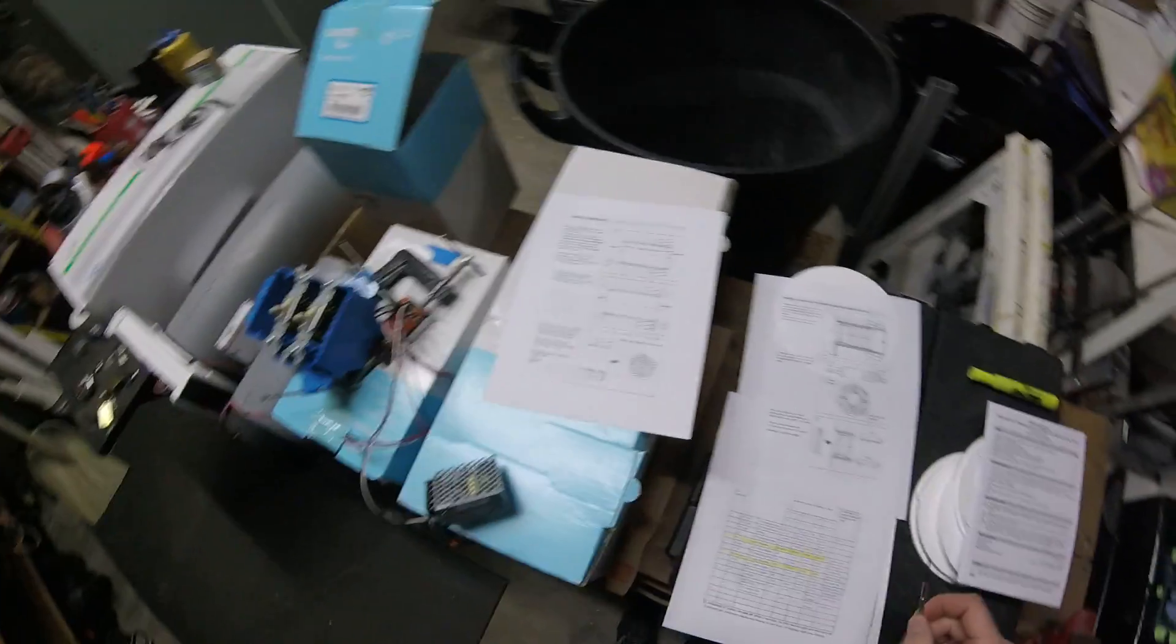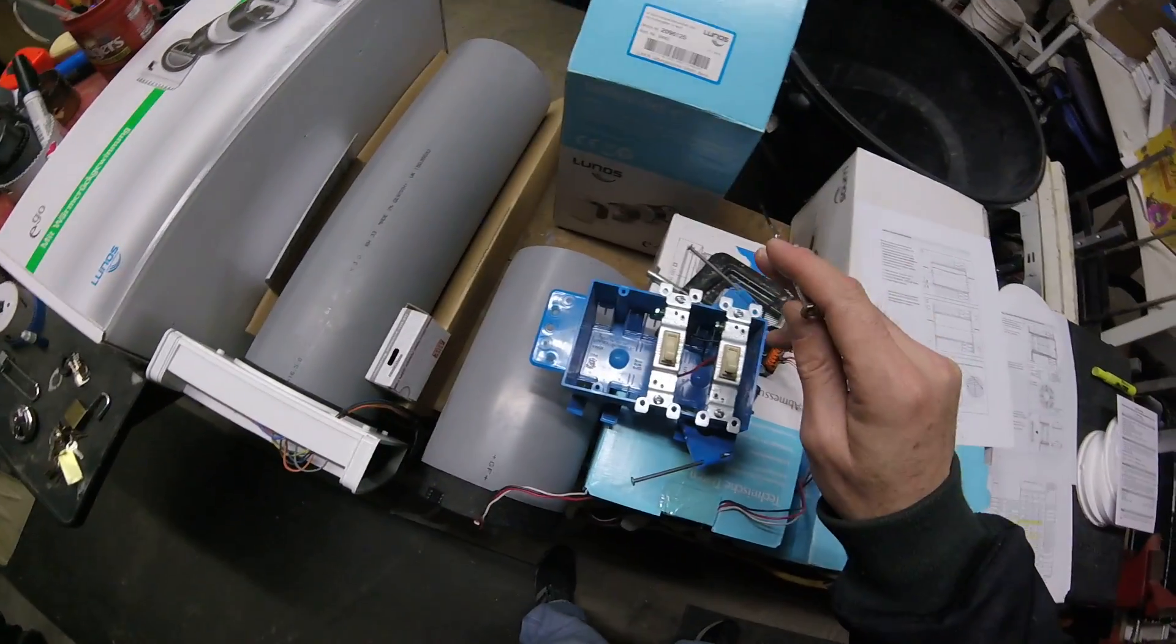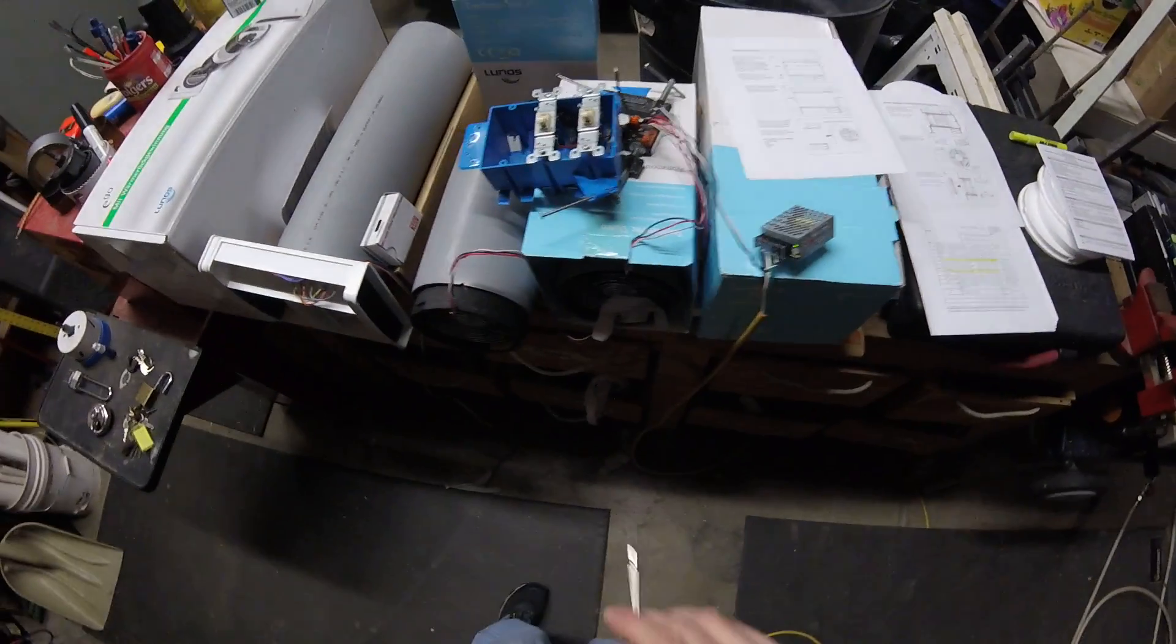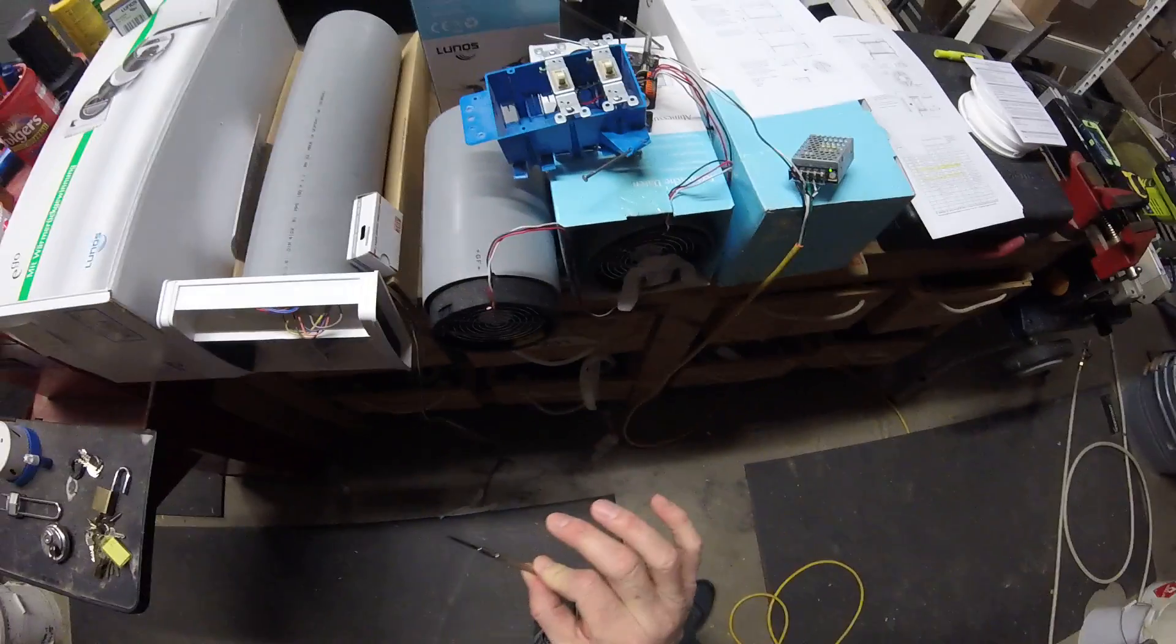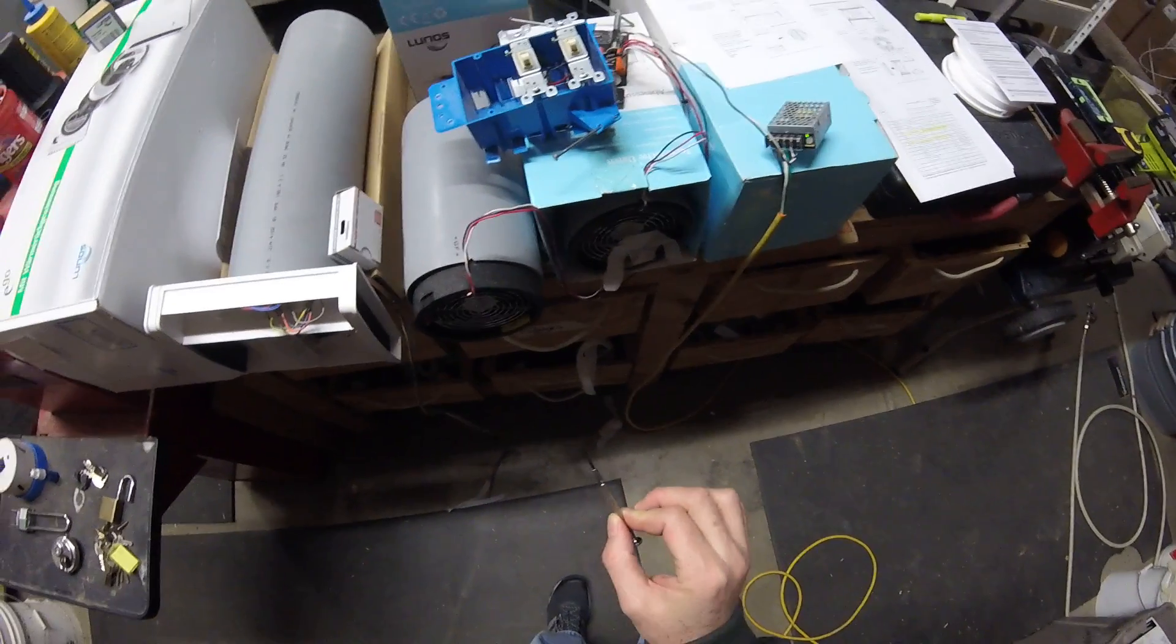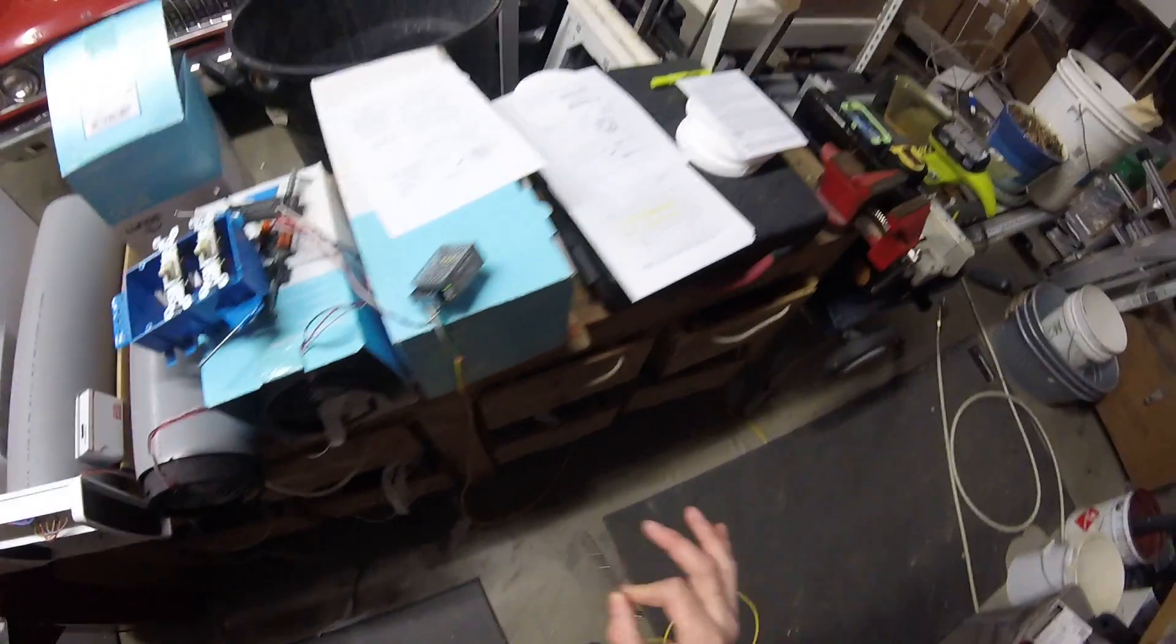Welcome to Mainstream. I just wanted to show you the Lunos E-Squared, which is basically a two-bedroom solution for filtered fresh air, balanced ventilation.